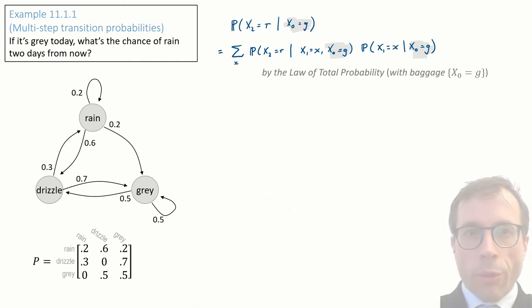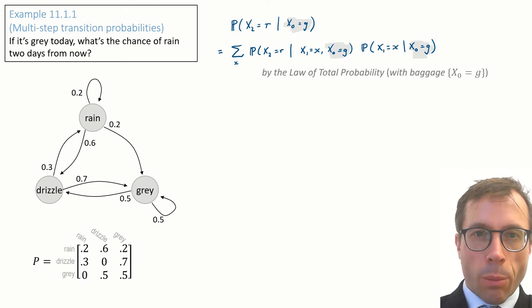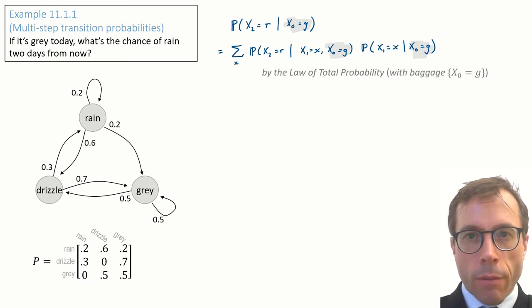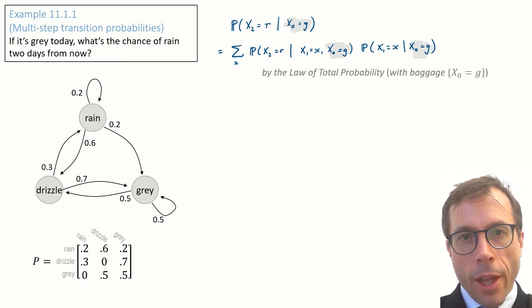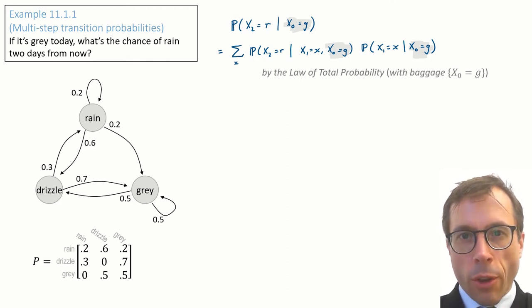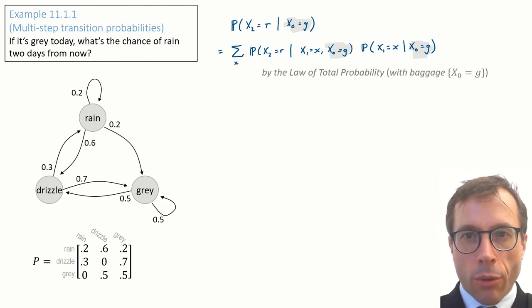All the basic rules of probability - the law of total probability, Bayes' rule, definition of independence - they all come with a conditional version. All you do is stick conditional on c as baggage onto every single one of the probabilities, and then everything just works. They're written out in full in the printed notes. And the printed notes also discuss what to do when the thing you want to condition on has probability zero.